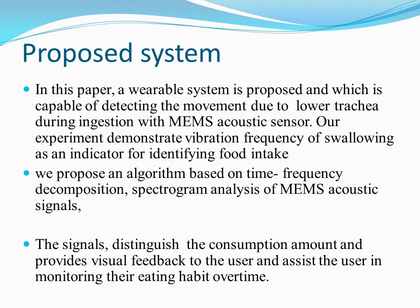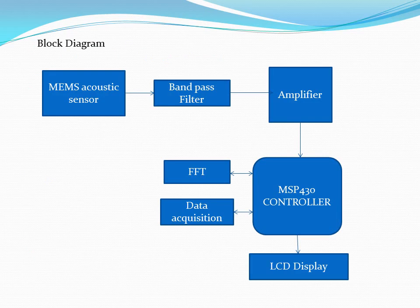The signals distinguish the consumption amount and provide visual feedback to the user, assisting them in monitoring their eating habits over time. The MEMS acoustic sensor is placed in the lower trachea where it typically uses the following patterns.